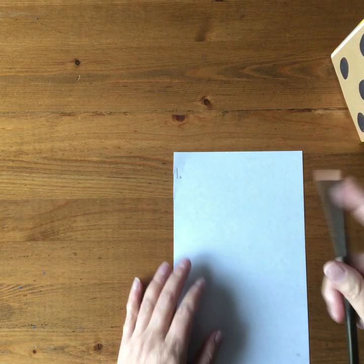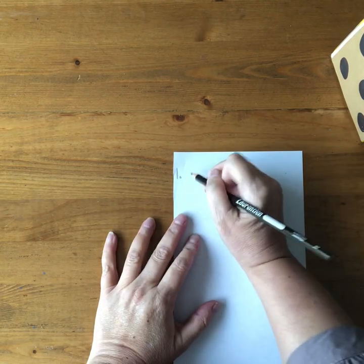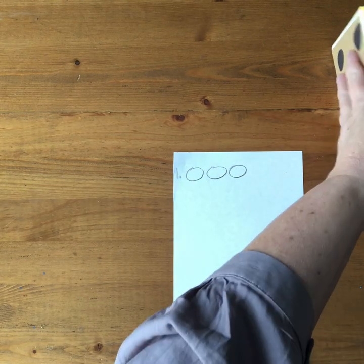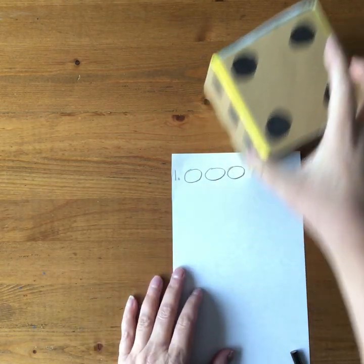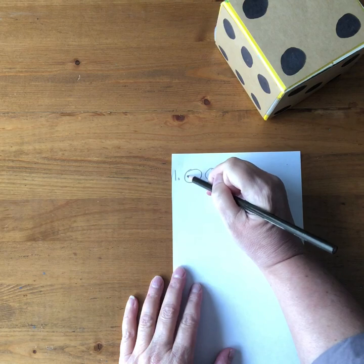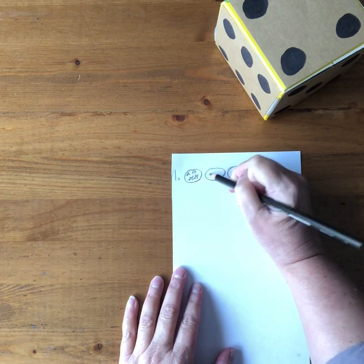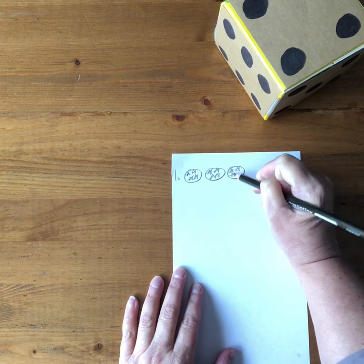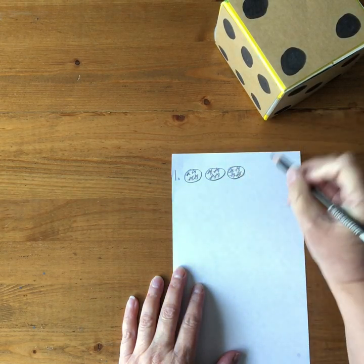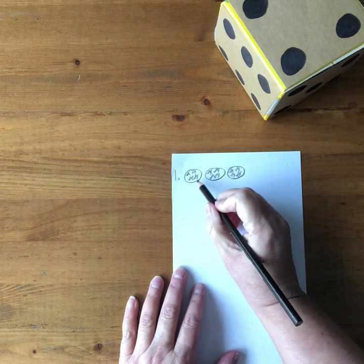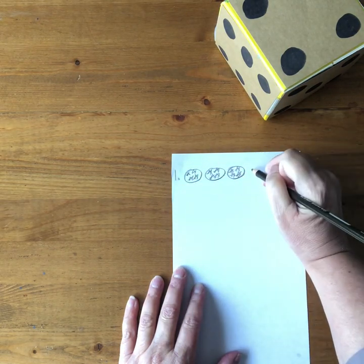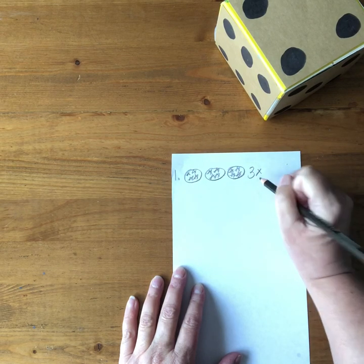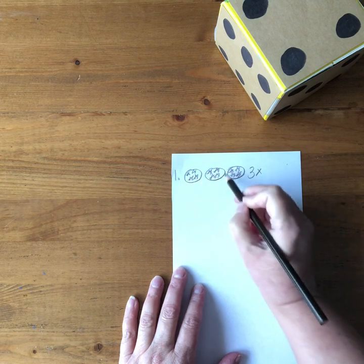So the first one I roll and I rolled a three so I draw three circles and that's the first factor and then the second roll this time I rolled a four so I draw in four stars in each circle and then I write the equation that corresponds to this picture so there's three groups or three circles so the first factor is three.